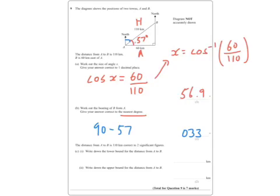Last one, write down the lower bound for the distance of A to B, measured to two significant figures. So A to B, lower bound is going to be 105, and the upper bound, 115.